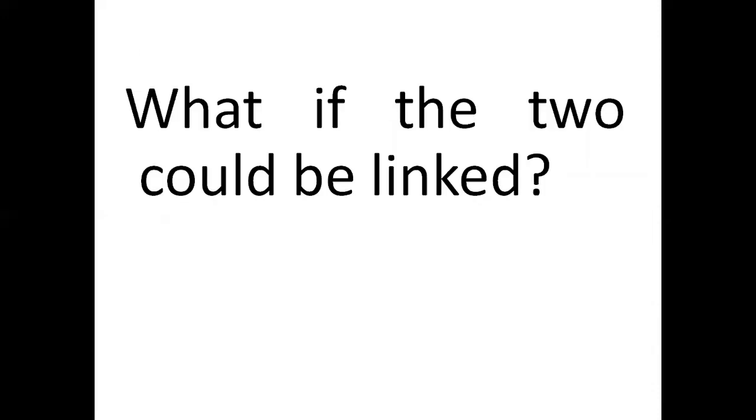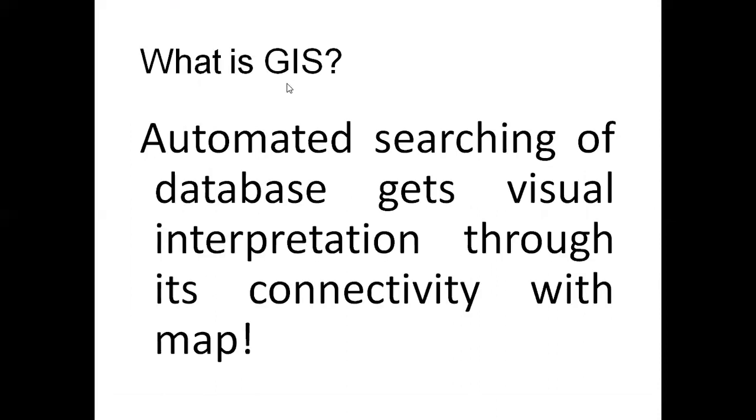GIS basically is the link between maps and database. GIS means automated searching of database gets visual interpretation through its connectivity with maps. If you have visual interpretation through maps, then you will have a software that will definitely be called GIS.